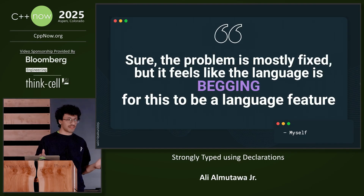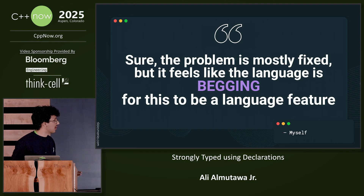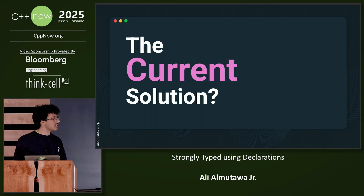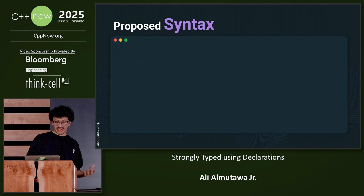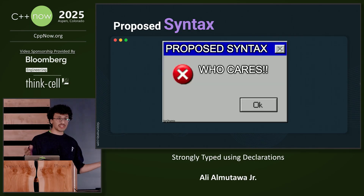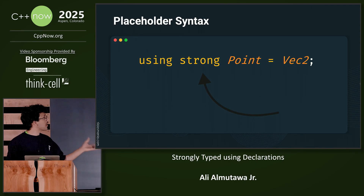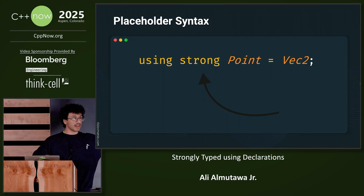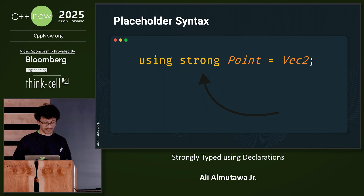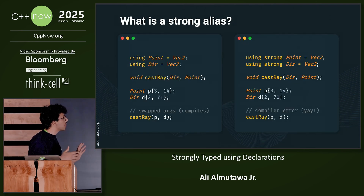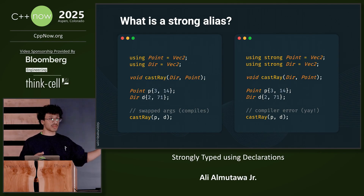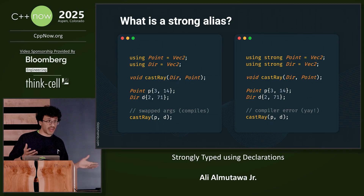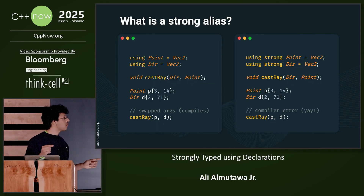The problem is mostly fixed, but then it feels like the language is begging for a language feature. So instead of the current solution, let's see what the C++ solution could be. We're writing a proposal, and the proposed syntax — the placeholder syntax I'm going to use — is 'using strong', then the alias type, then equal to the original type. On the left side we have the original code with regular using declarations, and at the bottom you can see the call to the function with the argument swap. This would compile, which is bad. On the right side, you see our feature 'using strong', and then the same code doesn't compile. This would be a compiler error.